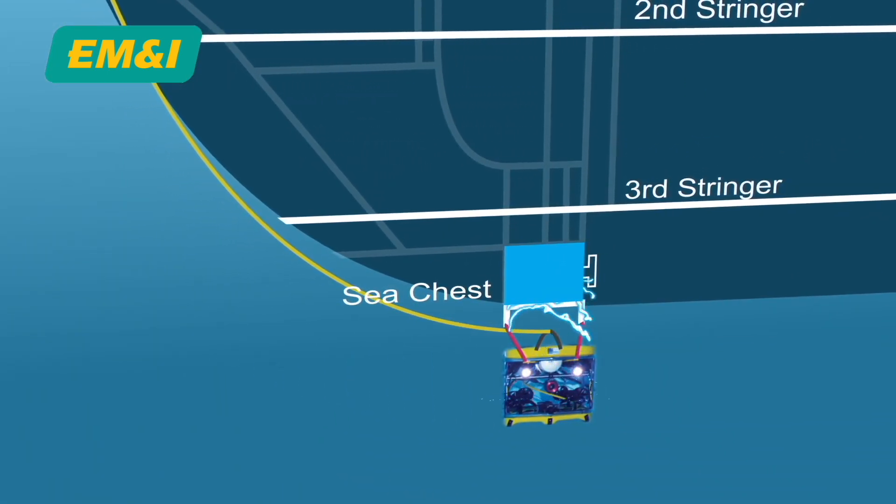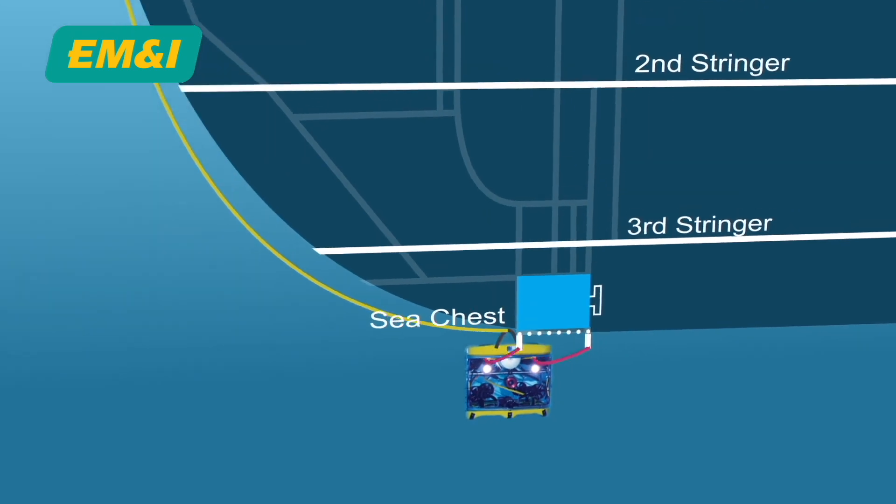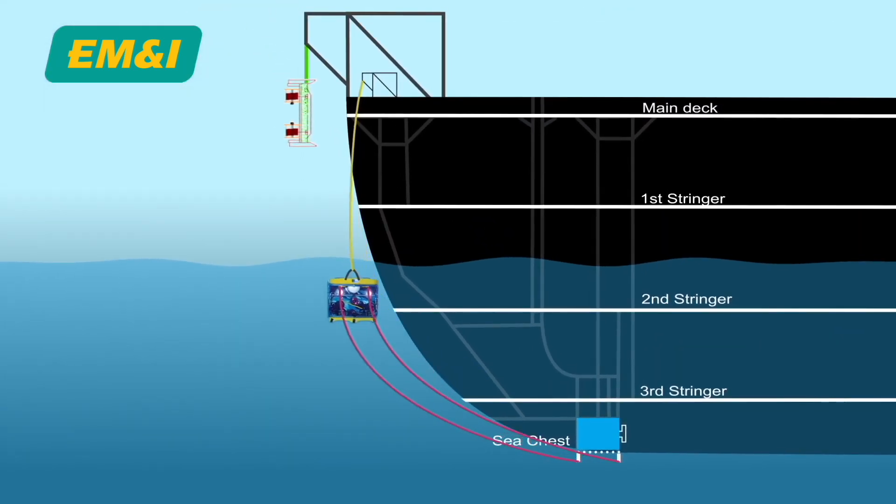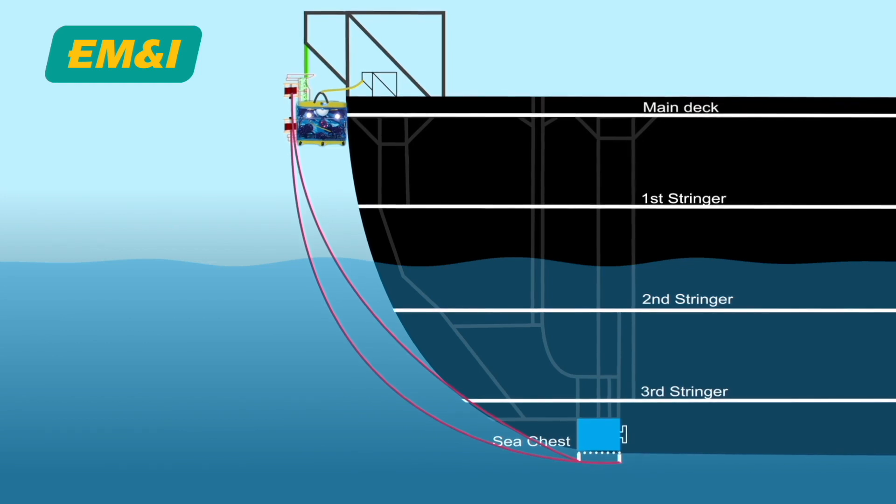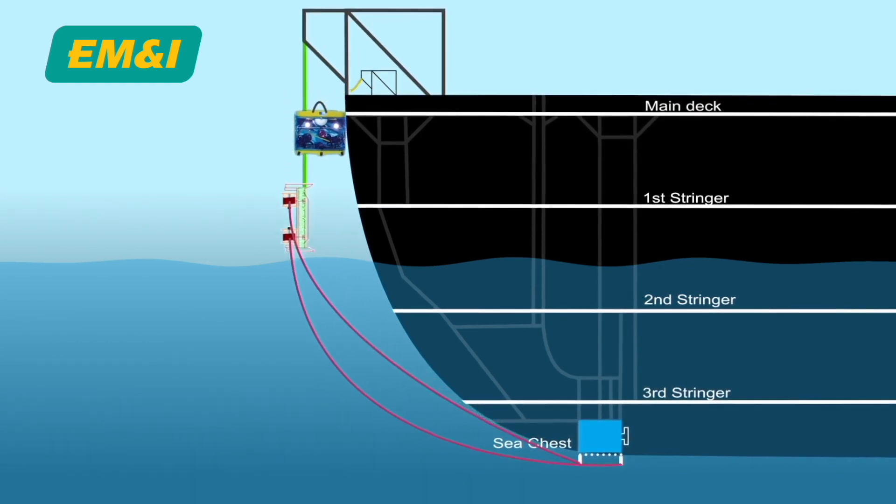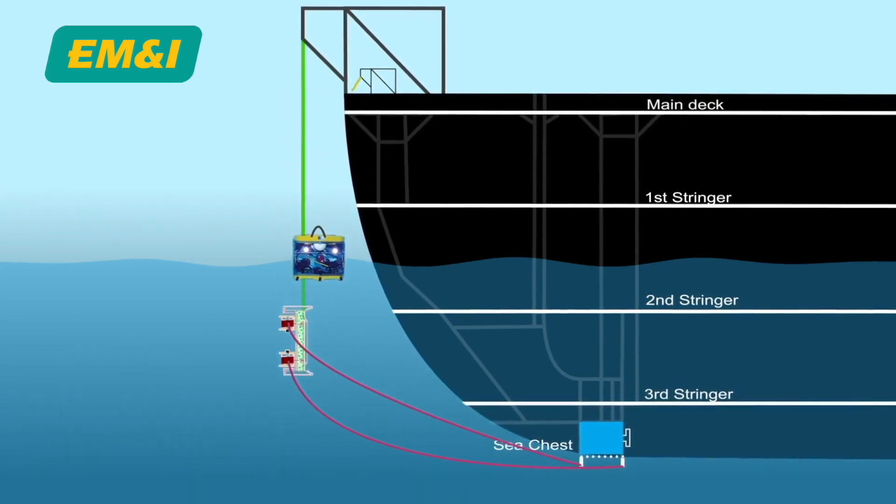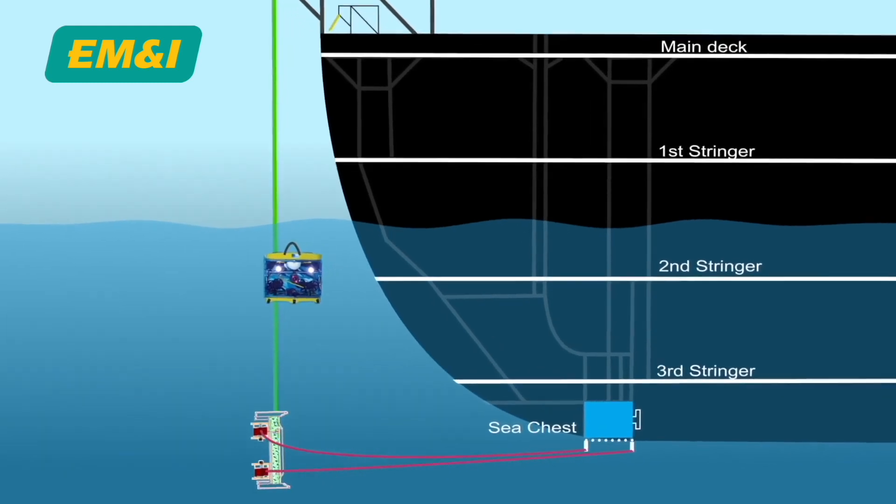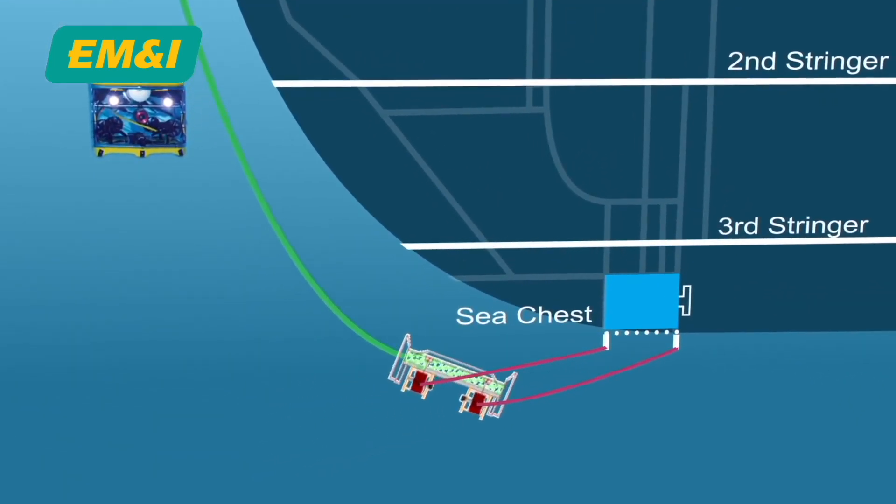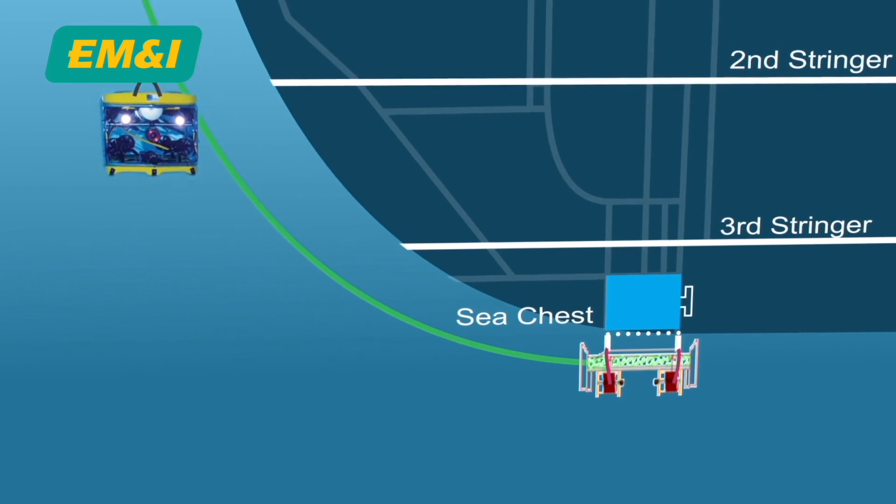After cleaning the chest with a cavitation cleaner, winch lines are then attached to the structure around the sea chest inlet using the ROV. The blank is then lowered from the main deck and pulled into position using the intelligent winches on the blank. The powered winch lines pull the sea chest blank into position with approximately 500 kg of force per line.